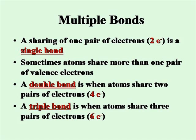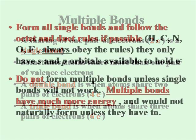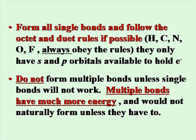If you're sharing one pair of electrons between two atoms, it's a single bond. Sometimes atoms will share more than one pair of valence electrons. A double bond is when atoms share two pairs of electrons, and a triple bond is when they share three pairs. When drawing a Lewis dot structure, always try to form single bonds first. You don't form multiple bonds unless single bonds will not work, since multiple bonds have much more energy and would not naturally form unless they have to.